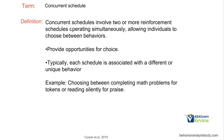Concurrent schedules involve two or more reinforcement schedules operating simultaneously, allowing individuals to choose between behaviors. Each schedule is typically associated with a different behavior. For example, completing math problems could earn tokens on an FR2, or reading silently could earn praise on an FI3-minute schedule. The learner now has the choice to complete math problems for tokens or read silently for praise — both are present, both are options, and both function on different schedules simultaneously.